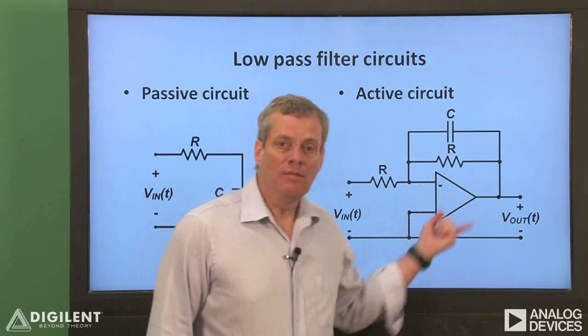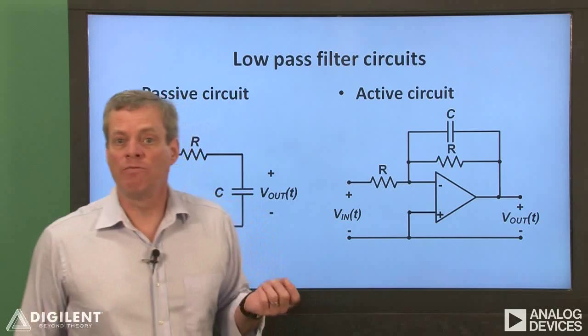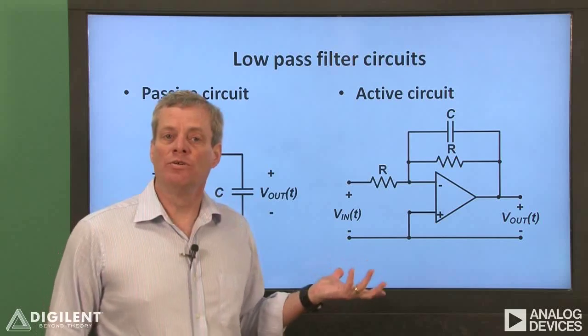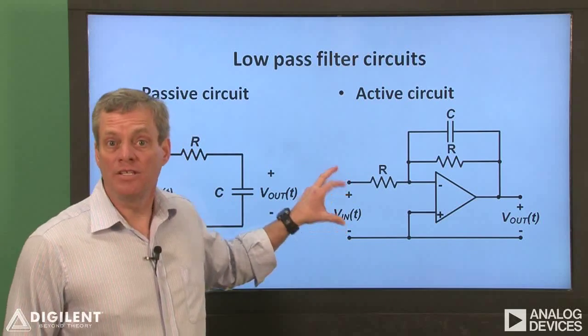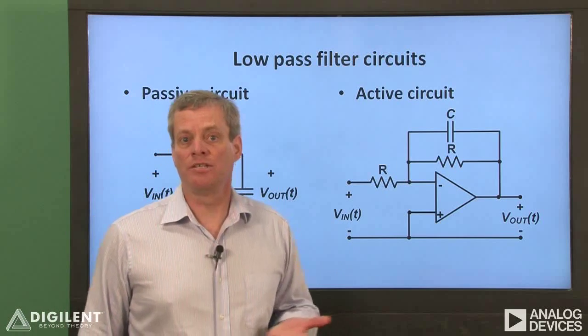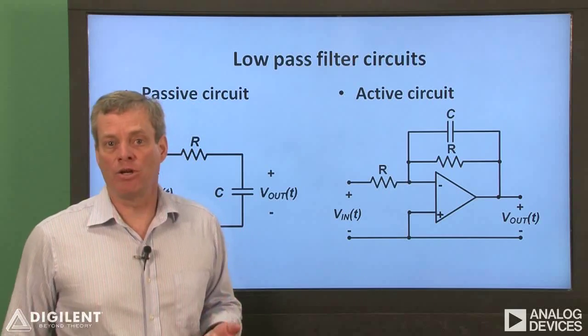Secondly, the high input impedance of the operational amplifier can allow us to design a circuit with very high input resistance. This means that we don't necessarily need to draw much current from the input voltage. This can be very important in instrumentation system applications where our input voltage might be provided by a sensor, which can't put out much power at all.